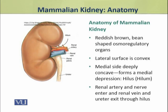The lateral surface of a kidney is convex, while the medial side is deeply concave. This concave side forms a medial depression which is called the hilus.